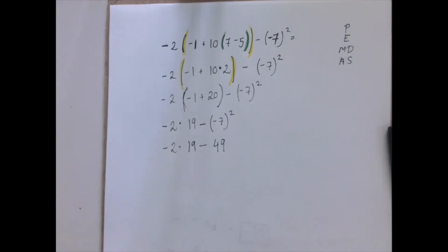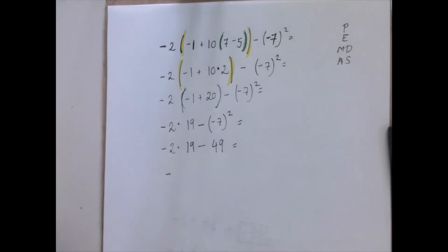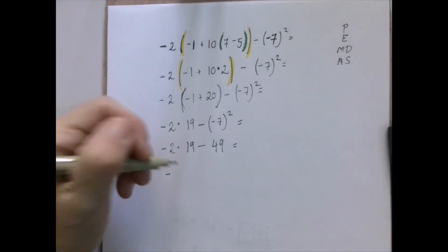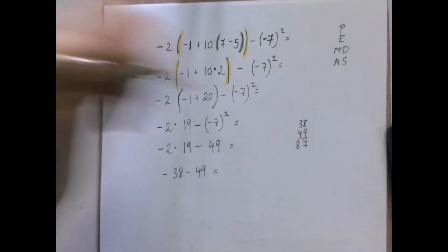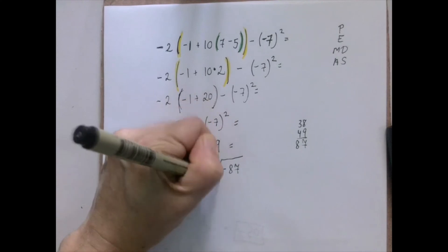So now we have a subtraction and a multiplication. Multiplication is stronger. Negative 2 times 19 is negative 38. And so finally, the subtraction is negative 38 minus 49. So the answer is negative 87.